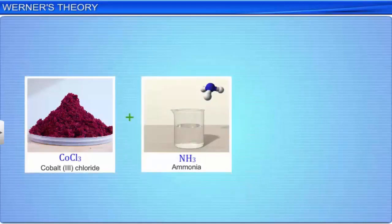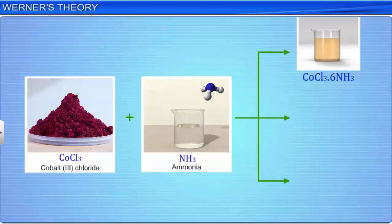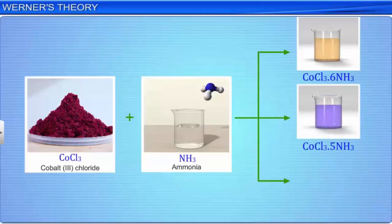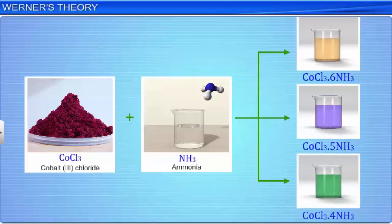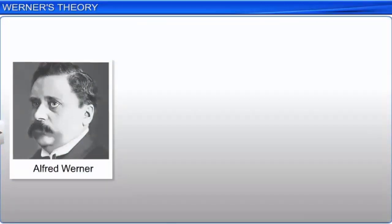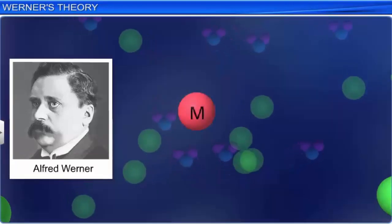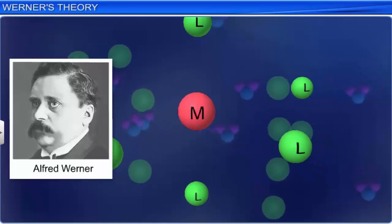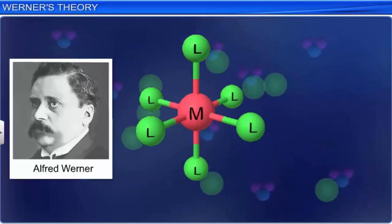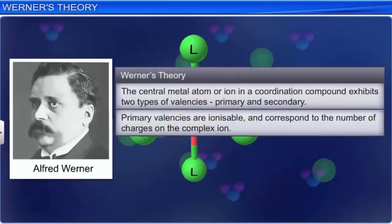Have you ever wondered why a stable salt such as cobalt trichloride combines with a group of stable independently existing molecules such as ammonia to form new compounds like CoCl3·6NH3, CoCl3·5NH3 and CoCl3·4NH3 with entirely new properties? Alfred Werner, a Swiss chemist, after preparing thousands of new compounds and studying their properties, put forward a theory to explain the formation of complex compounds. It was the first successful explanation for the phenomenon, and became famous as the Coordination Theory of Complex Compounds, also known as Werner's Theory.